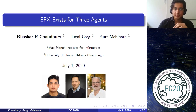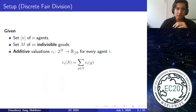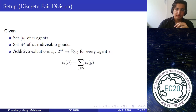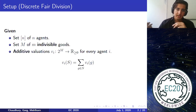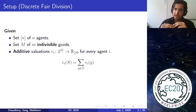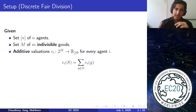I'll be talking about EFX existence for three agents. Let's start with a typical setup of discrete fair division. We are given a set of N agents and a set of N indivisible goods, and each agent has a valuation function signifying the utility the agent has for each subset of goods. Throughout, we'll deal with additive valuations, where the valuation of a set is the sum of valuations of the individual items. These are also the most well-studied class of valuations.